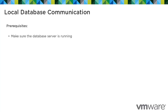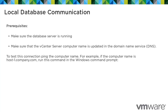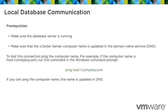Make sure the database server is running, and make sure that the vCenter Server computer name is updated in the domain name service. To test this connection, ping the computer name. For example, if the computer name is host-1.company.com, run the following command in the Windows command prompt. If you can ping the computer name, the name is updated in DNS.